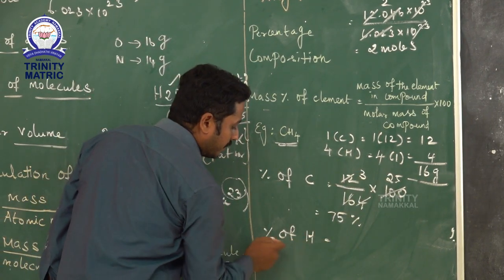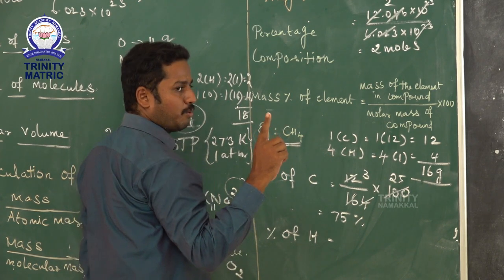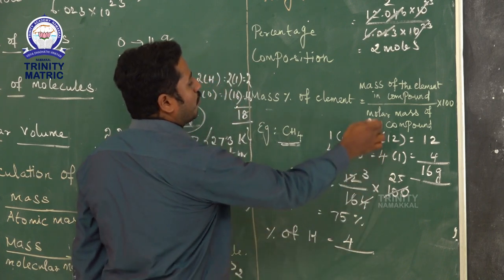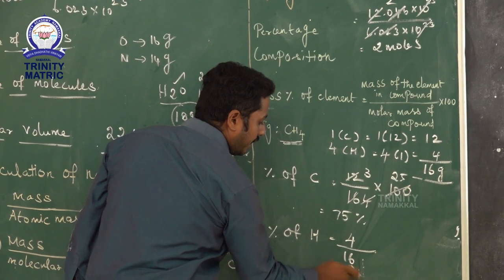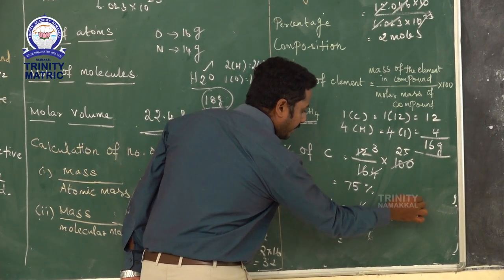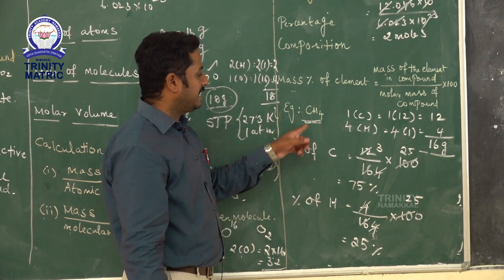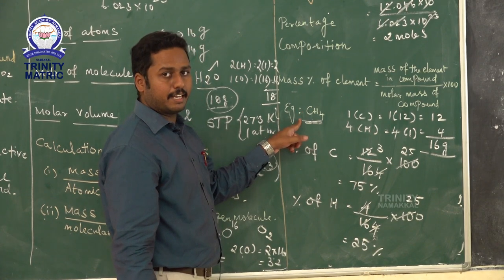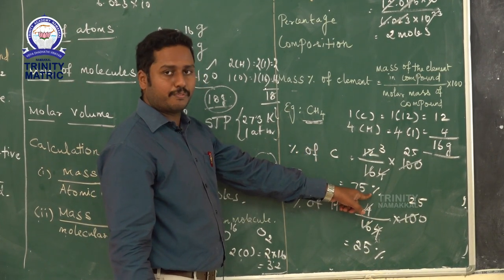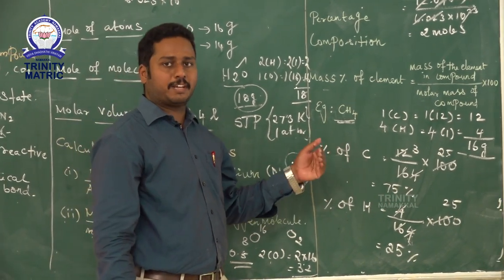So in methane, 75% is carbon and 25% is hydrogen. In 100% methane, 75% is carbon and the remaining 25% is hydrogen. This is known as percentage composition. You should practice this with examples from the textbook.